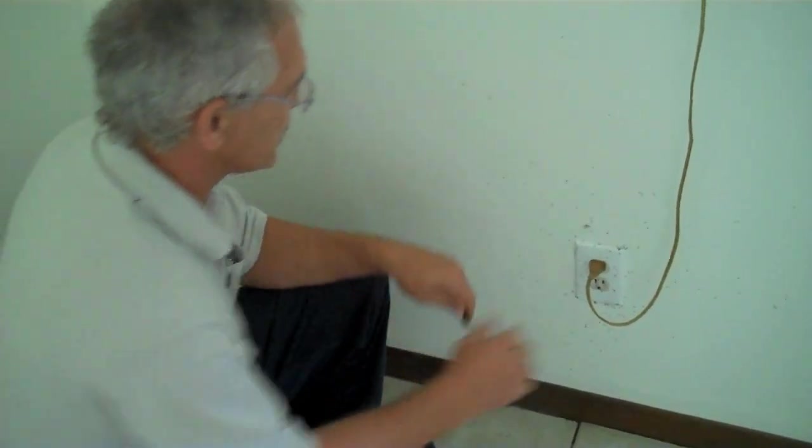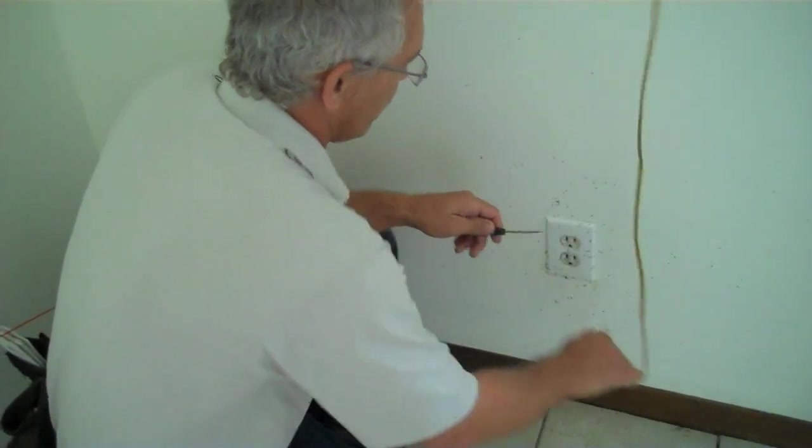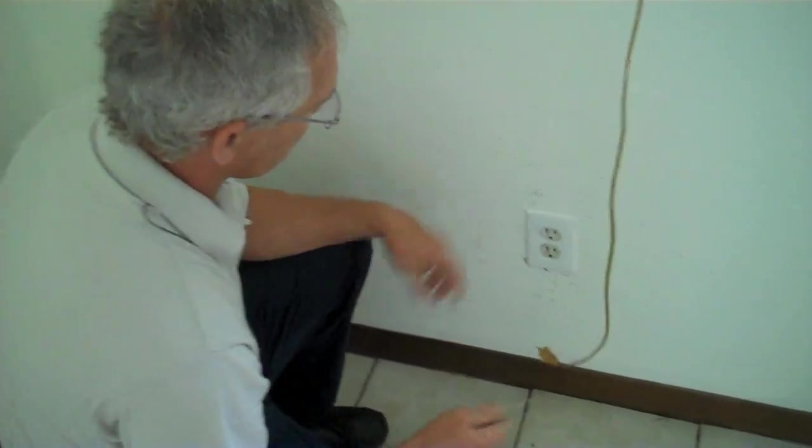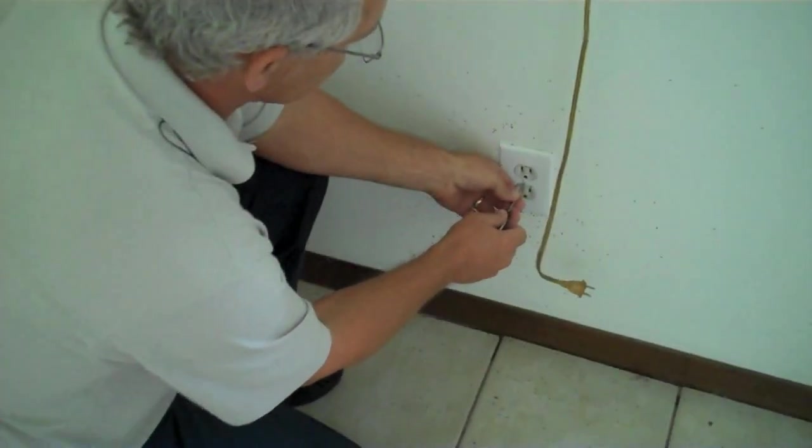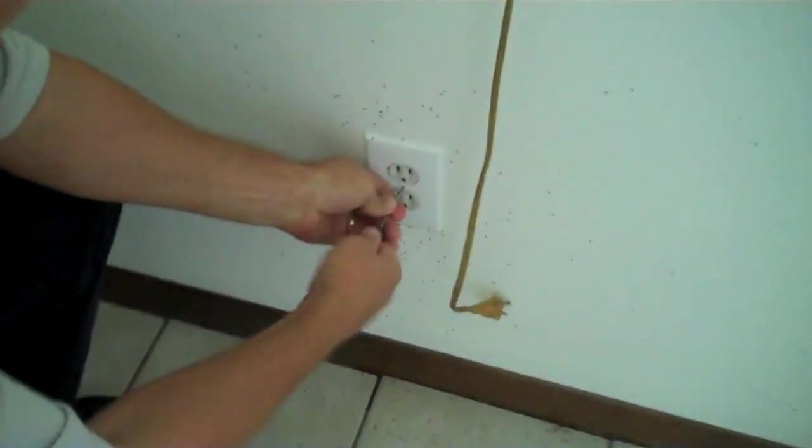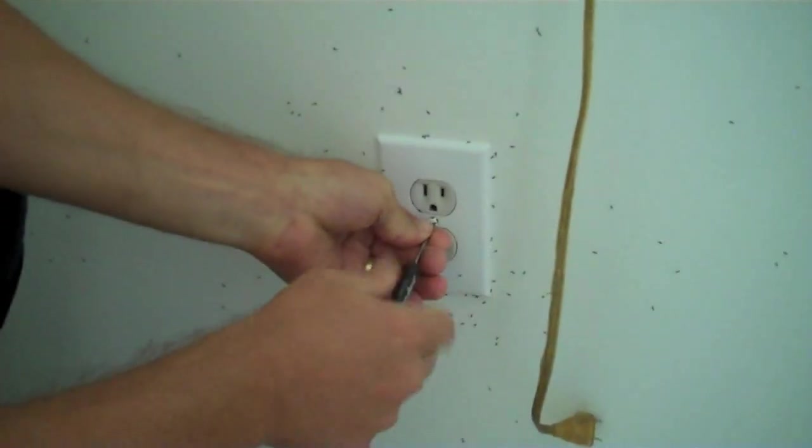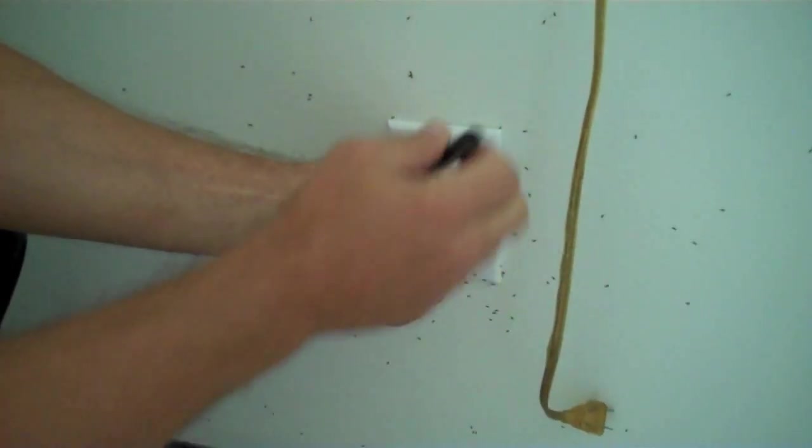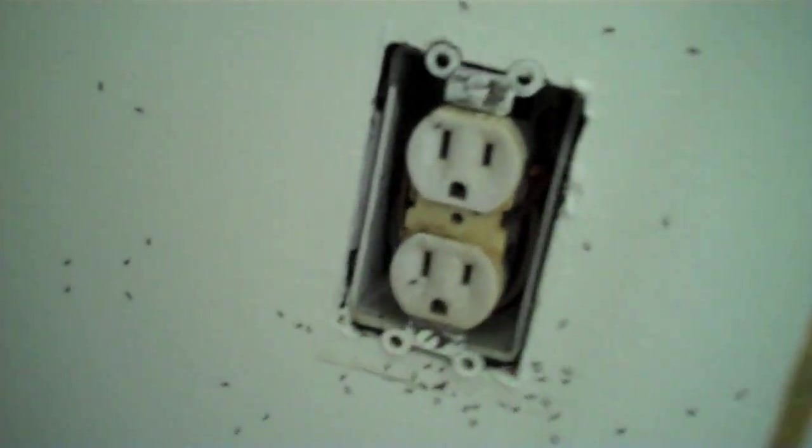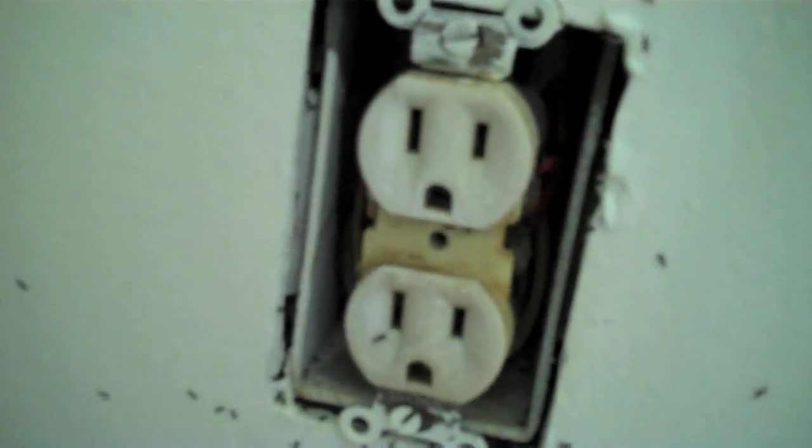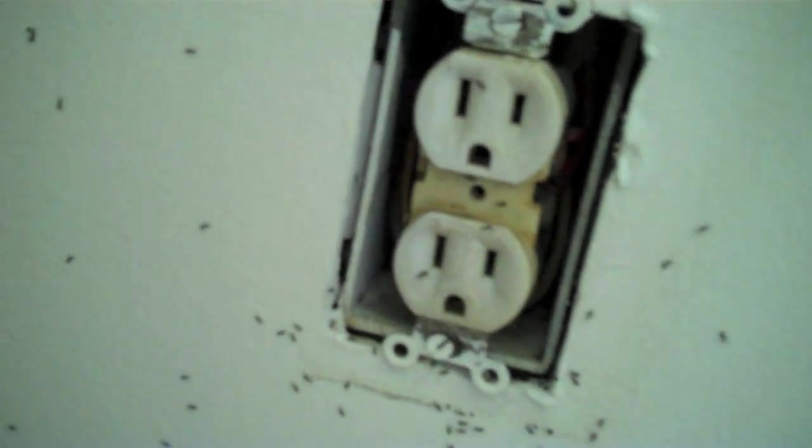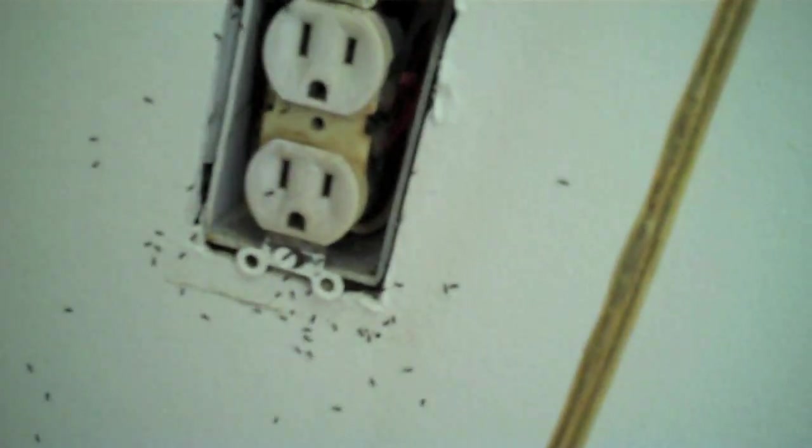So I'm going to go ahead and treat this. You want to be careful anytime you're dealing with electricity. I always keep a little screwdriver on hand and these little screws get lost, so you want to hang on to them. But there we can see just a ton of little tiny black ants.